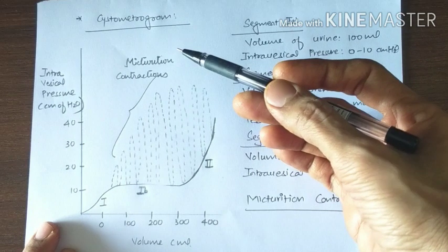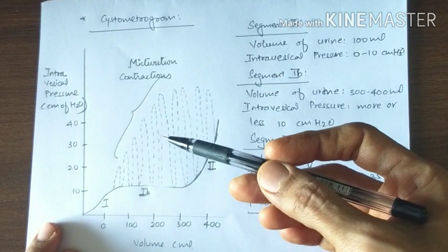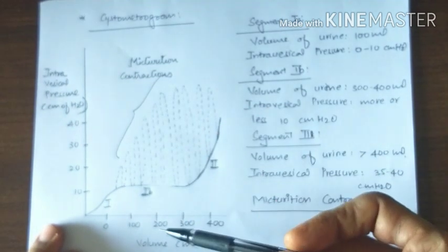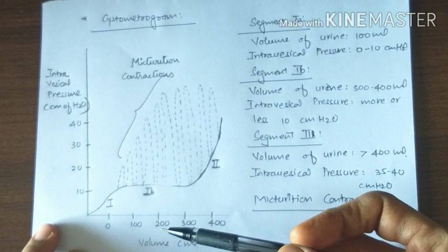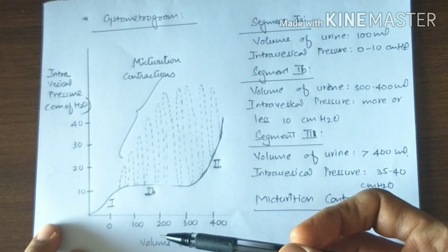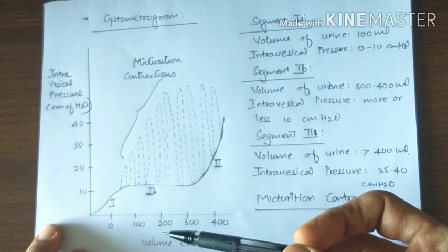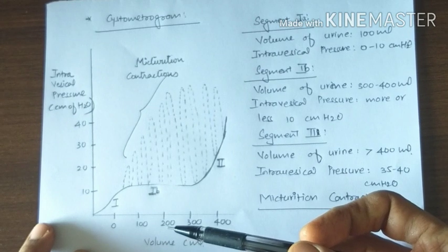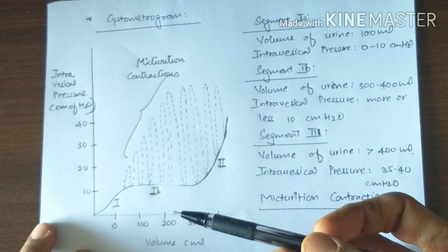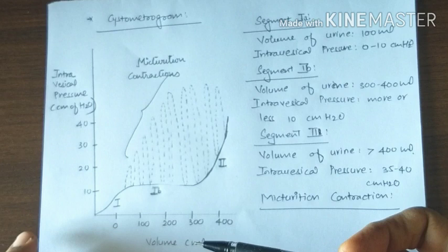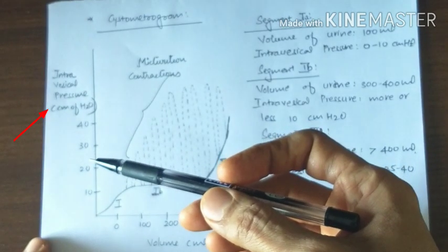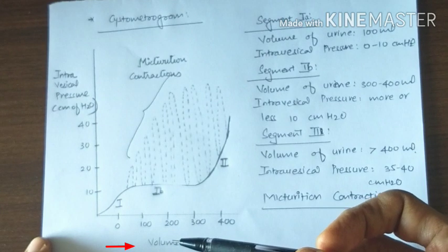Cystometrogram: When the bladder fills, there is change in the pressure with change in volume. The graphical representation of pressure changes in the urinary bladder in relation to volume changes is the cystometrogram. Cystometroid is the technique used to demonstrate the relationship between intravesical pressure and intravesical volume.